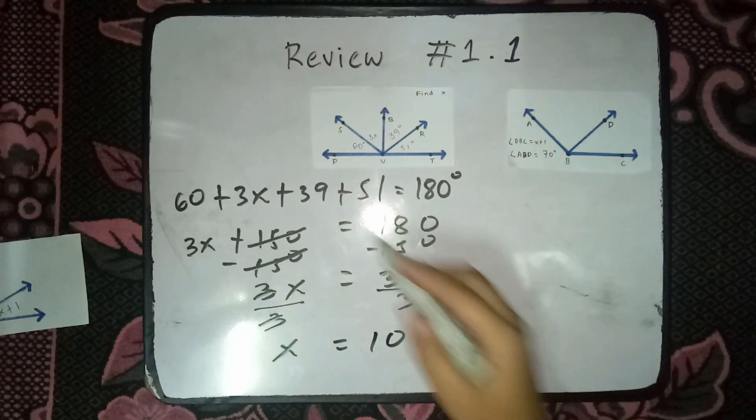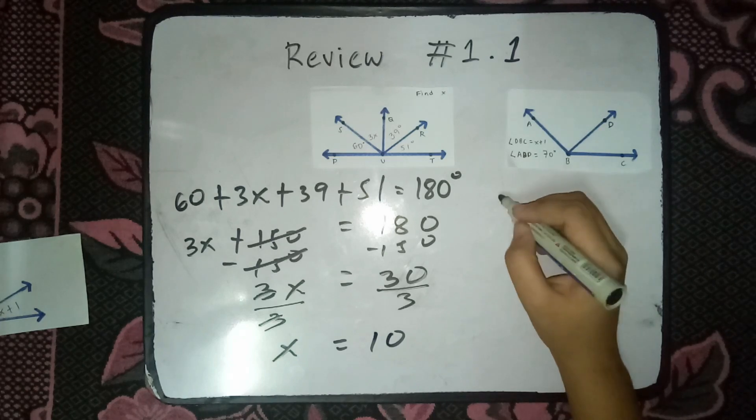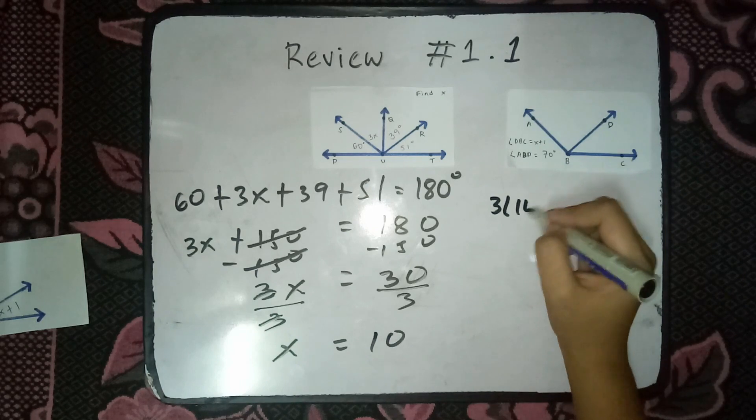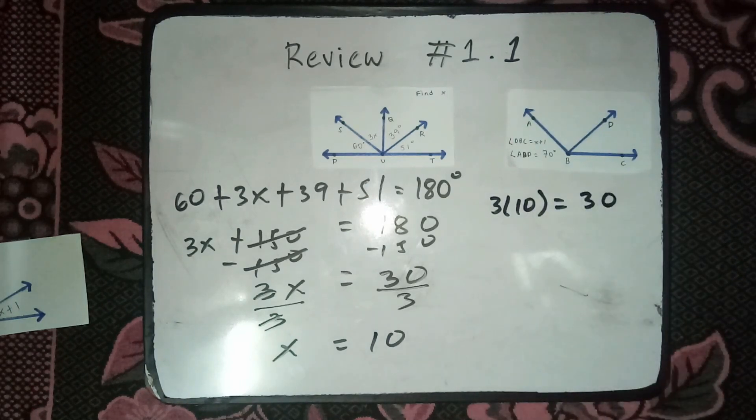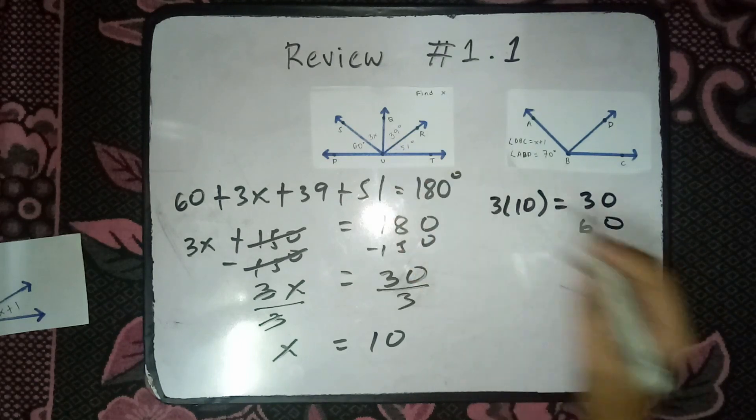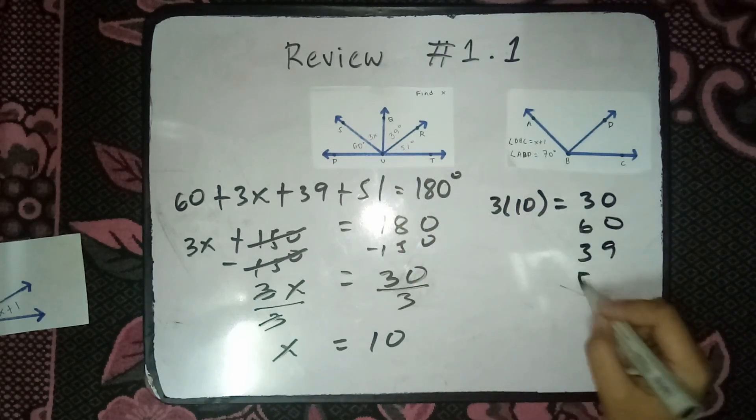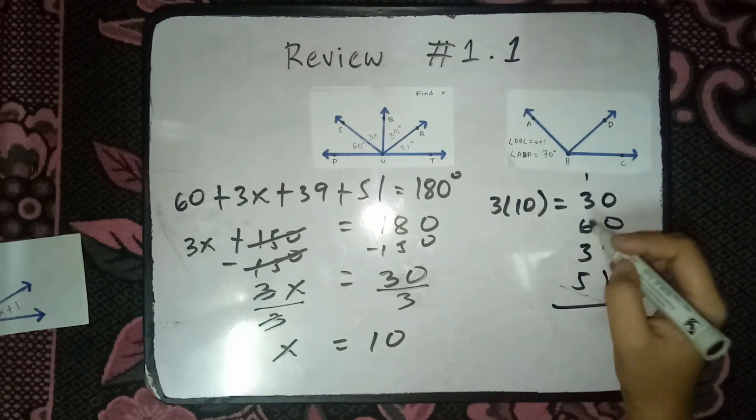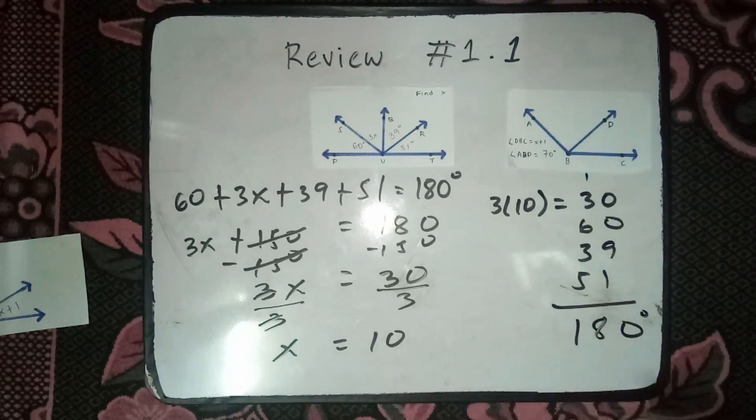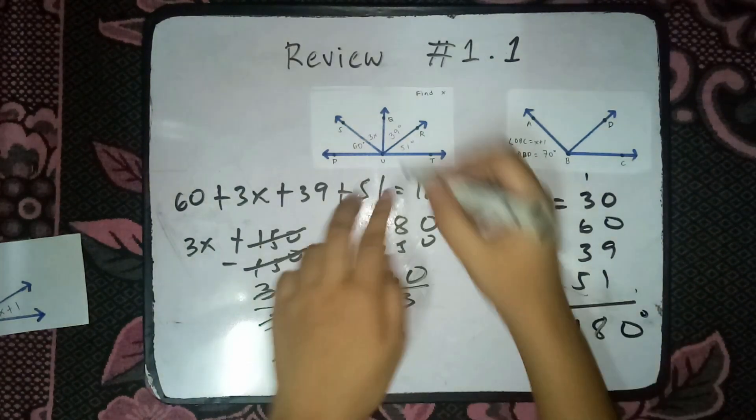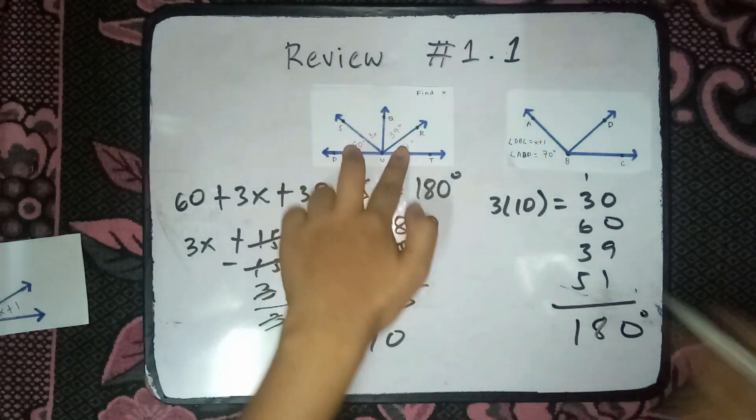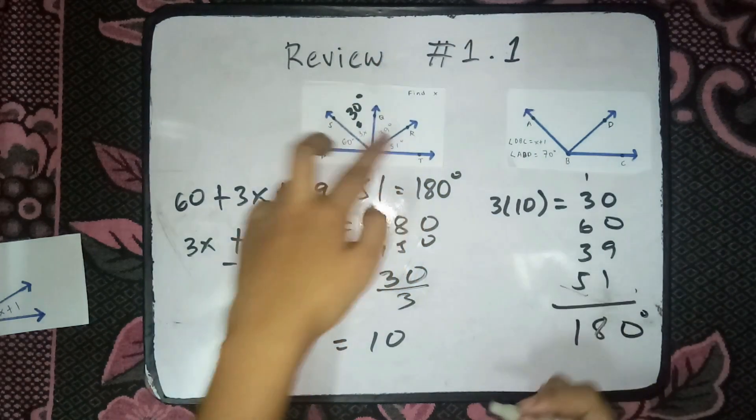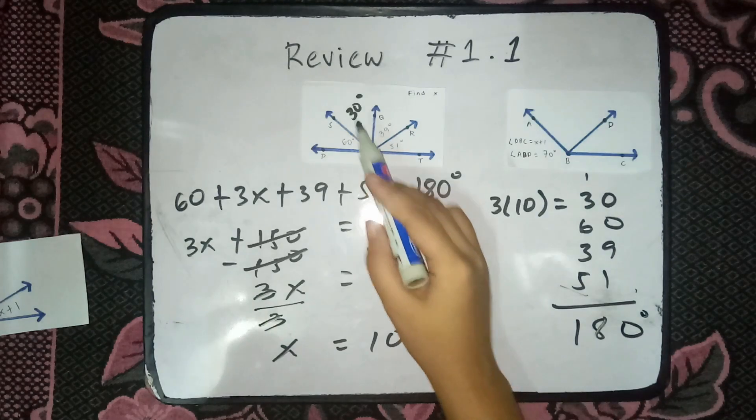Check natin yung sagot natin. 3 times 10 is equals to 30, plus 60 plus 39 plus 51 is equals to 180 degree. So, this value, this angle is equals to 30 degree. Kasi, 3 times 10 is equals to 30. Thank you.